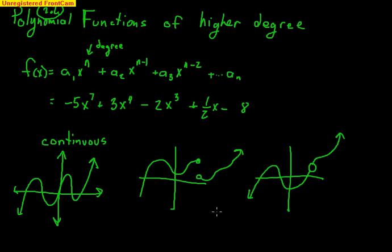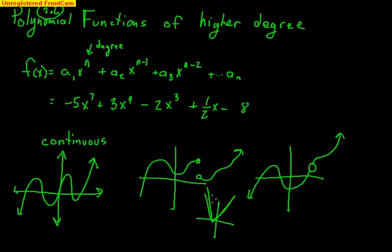Also, polynomials cannot have sharp turns. An absolute value function is real sharp like that — that is not considered a polynomial. Even though you could draw it continuously without picking up your pencil, it does have a sharp turn, so that's not a polynomial function.